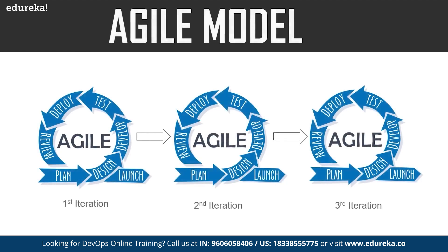The next model is the agile model. In this model, the software is broken down into various iterations. Each iteration has various phases such as planning, design, development, and so on. The duration of each iteration is generally two to eight weeks. In the agile model, you release the software in the first iteration, then gather feedback from end users, incorporate those changes into the second iteration, and release the software again, repeating this cycle.